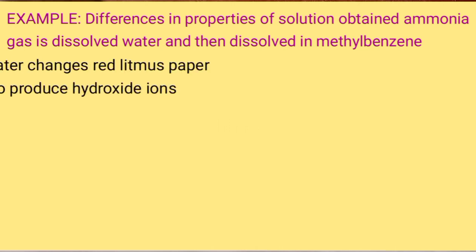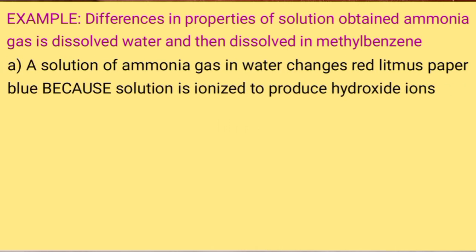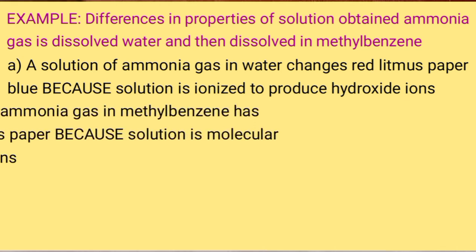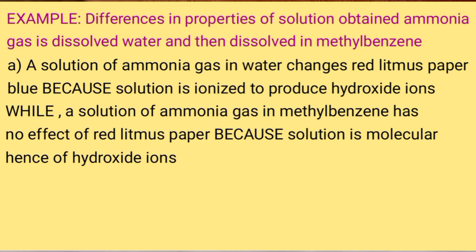A solution of ammonia gas in water changes red litmus paper blue because the solution is ionized to produce hydroxide ions. A solution of ammonia gas in methylbenzene has no effect on litmus paper because the solution is molecular, with an absence of hydroxide ions.